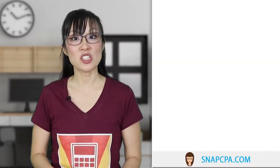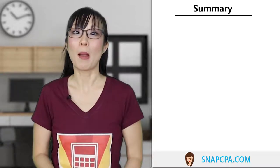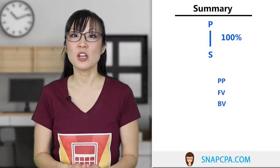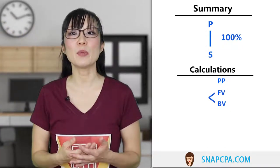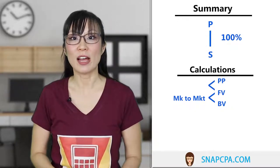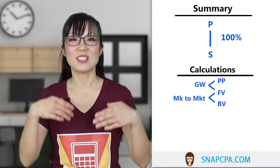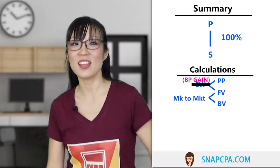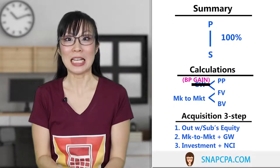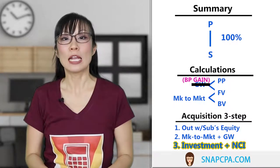For acquisitions and the consolidation of the acquisition entry, just remember: first, draw the picture — P, S, and the ownership percentage. Then set up your calculations: book value on the bottom, fair value in the middle, and purchase price at the top. The difference between book value and fair value you mark to market. The difference between fair value and purchase price goes to goodwill — unless the purchase price is less than the fair value of the sub, in which case the parent records a bargain purchase gain. Then to consolidate, go to the acquisition three-step: first, out with sub's equity; second, mark to market and excess to goodwill; third, get rid of the investment and establish non-controlling interest. Up next, we're going to see what happens when the parent buys less than 100% of the sub and how we account for non-controlling interest. Don't go away — I'm Liz Jo with Test Prep in a Snap.